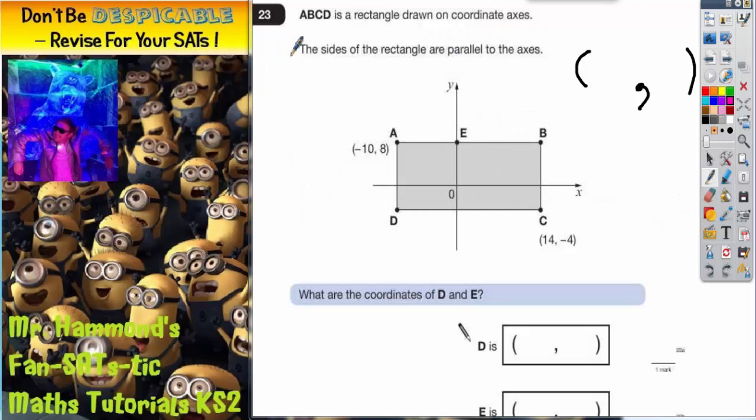Question 23. It is towards the end of the paper so we would expect this to be a level 5 question. It says ABCD is a rectangle drawn on coordinate axes. The sides of the rectangle are parallel to the axes. What are the coordinates of D and E?